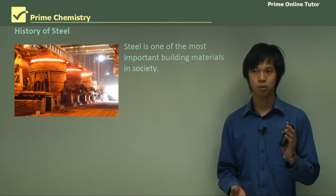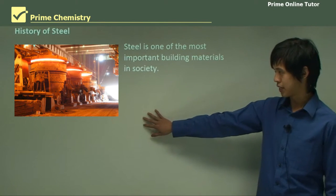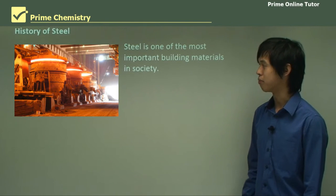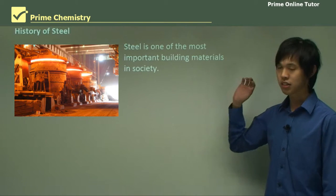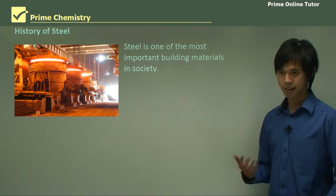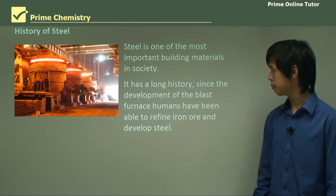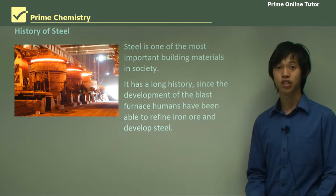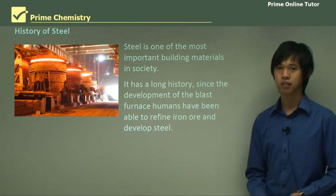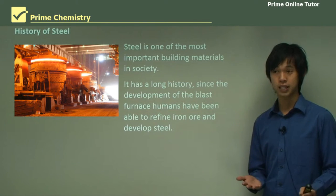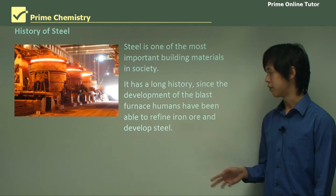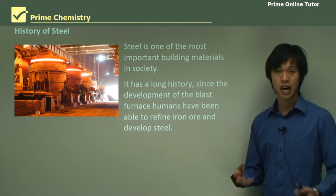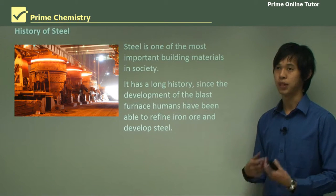Let's take a quick walk through history about steel. Here we have a pretty typical steel foundry, showing the scale at which we produce steel industrially. It has a fairly long history since the development of the blast furnace — the Chinese were the first to develop it. With the blast furnace, iron became available, and then we could develop steel from there.